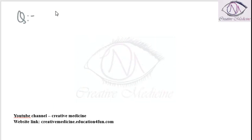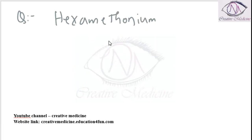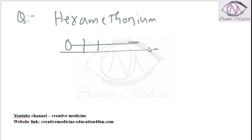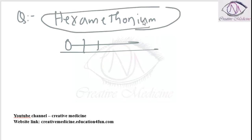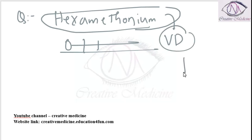We administer hexamethonium to a subject who is in the supine position. Which of the following responses would you expect in response to this drug? Hexamethonium will cause vasodilation and thus it decreases the blood pressure.